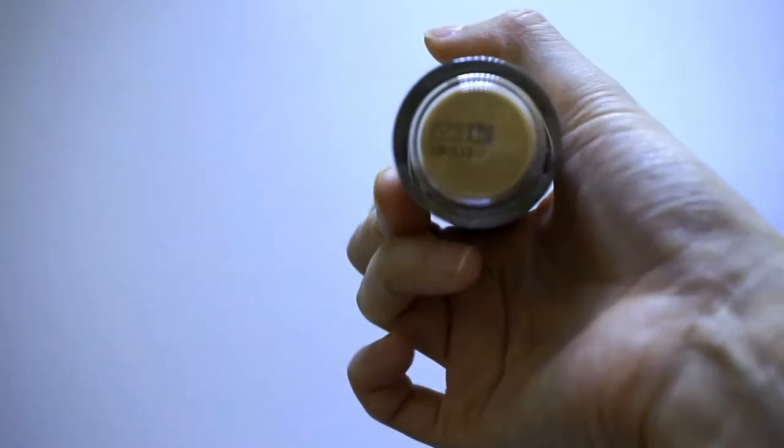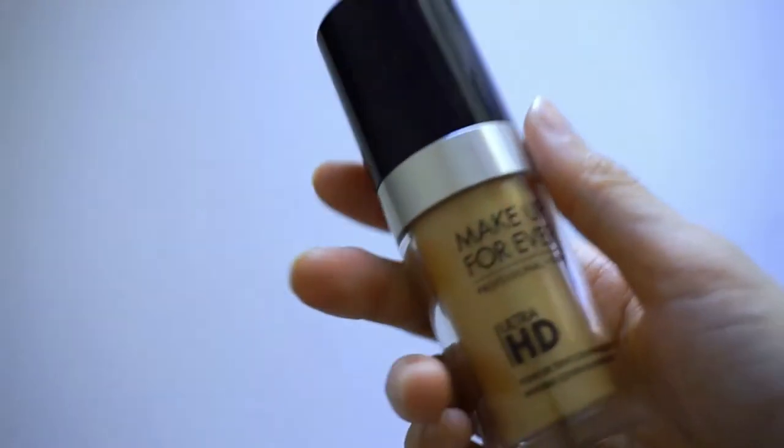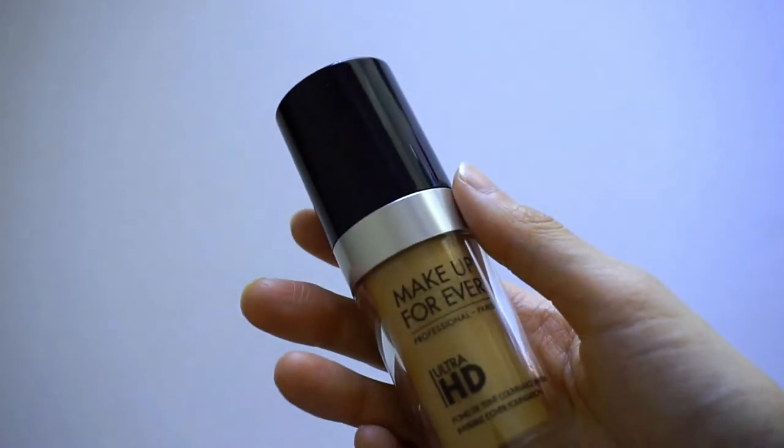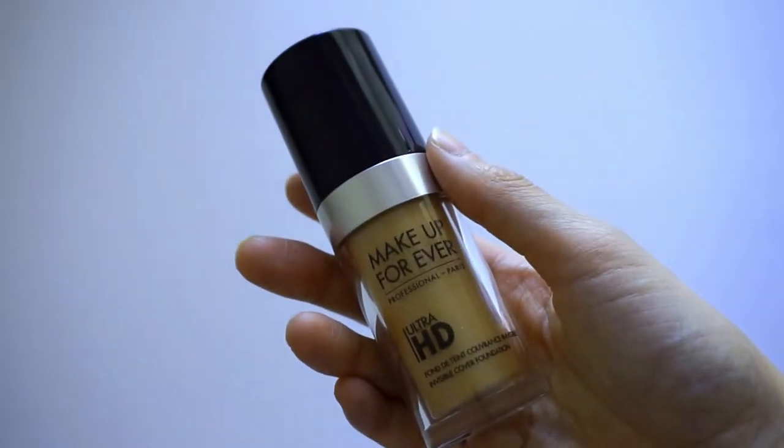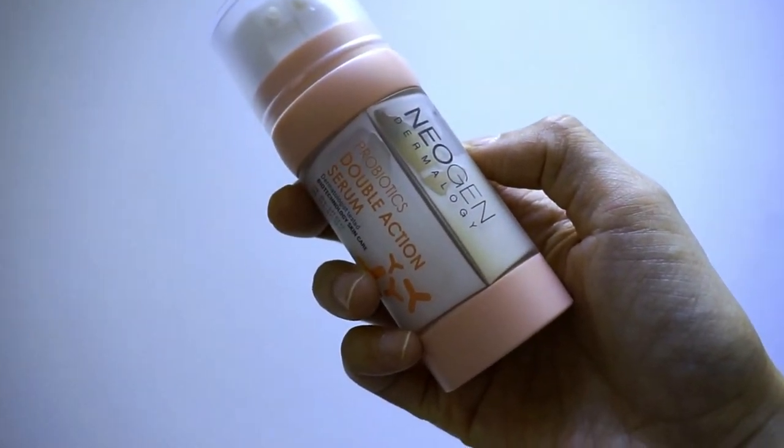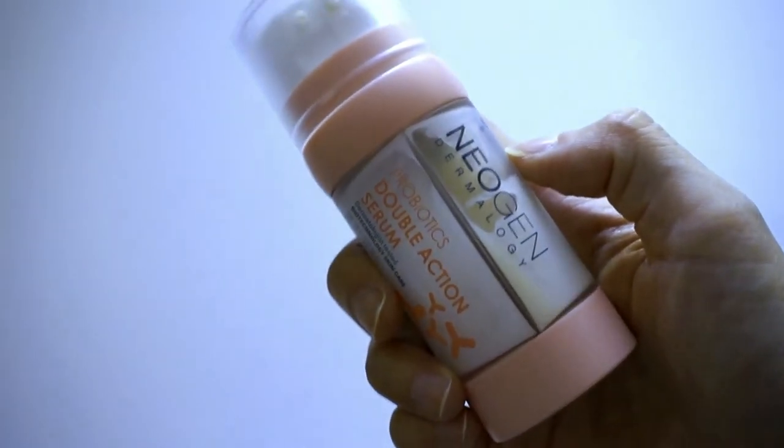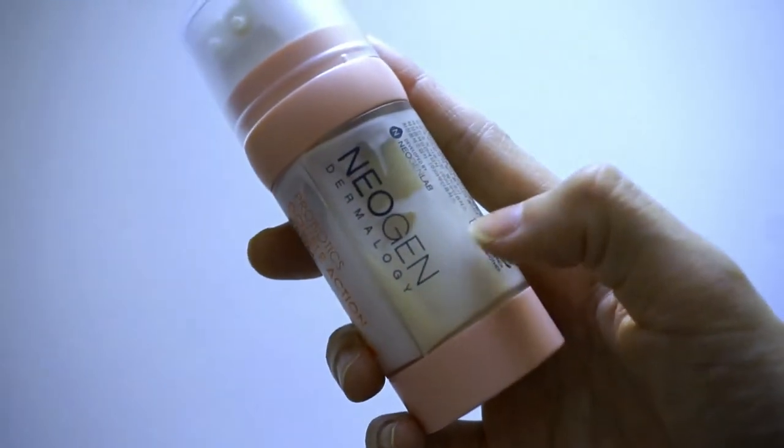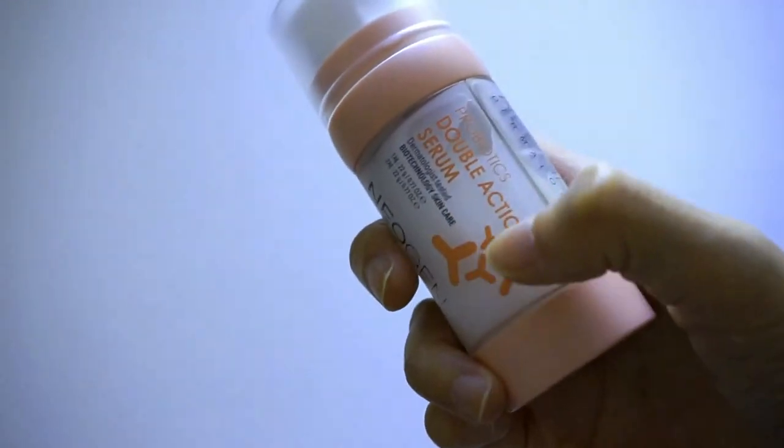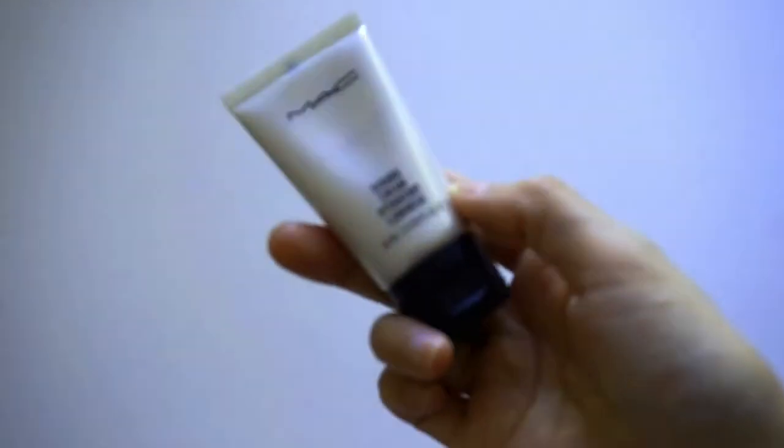For some people if you don't have a perfect shade, you can definitely mix in other foundations as well. Currently I am using the Neogen Probiotics Double Action Serum, where it's two different kinds of serums. This ivory one is a little bit thicker than this lighter white one, so I like to mix both of them into my compact.